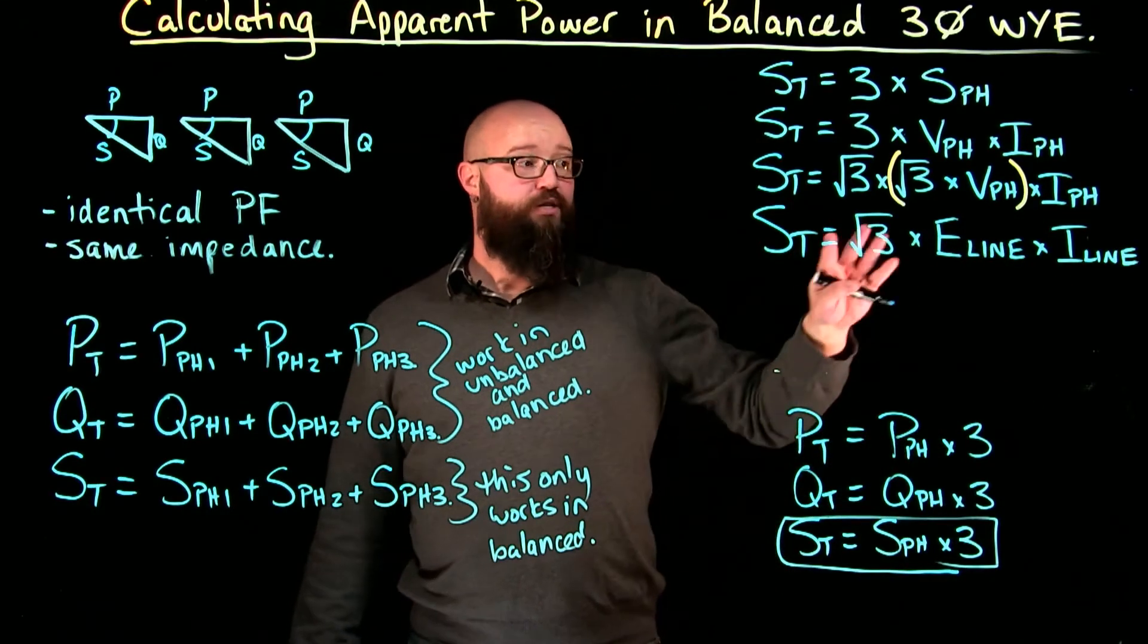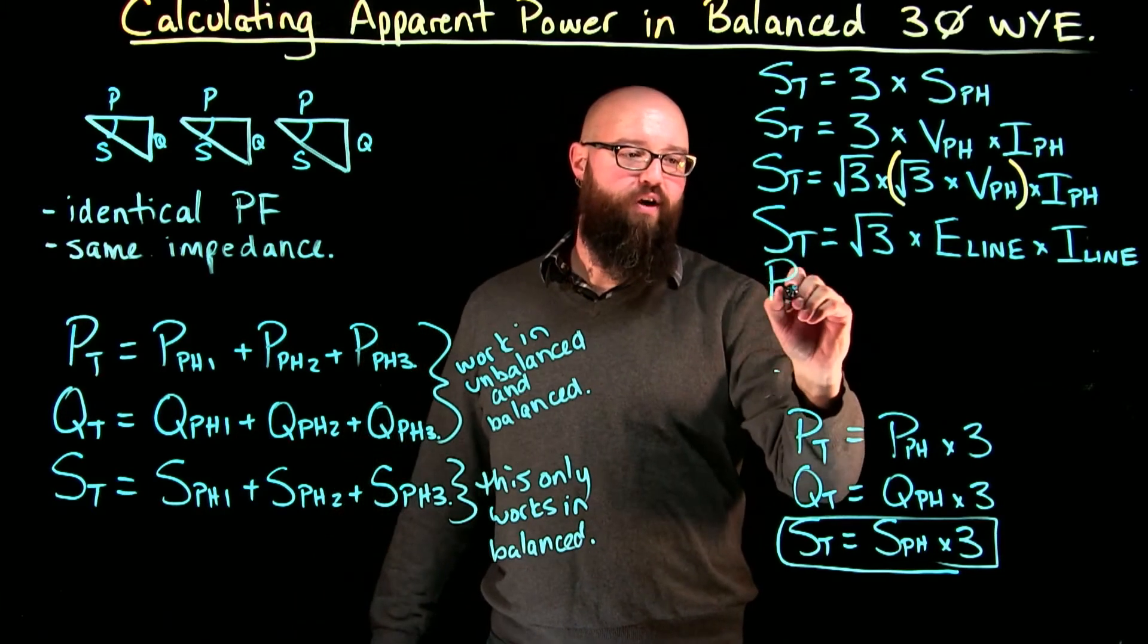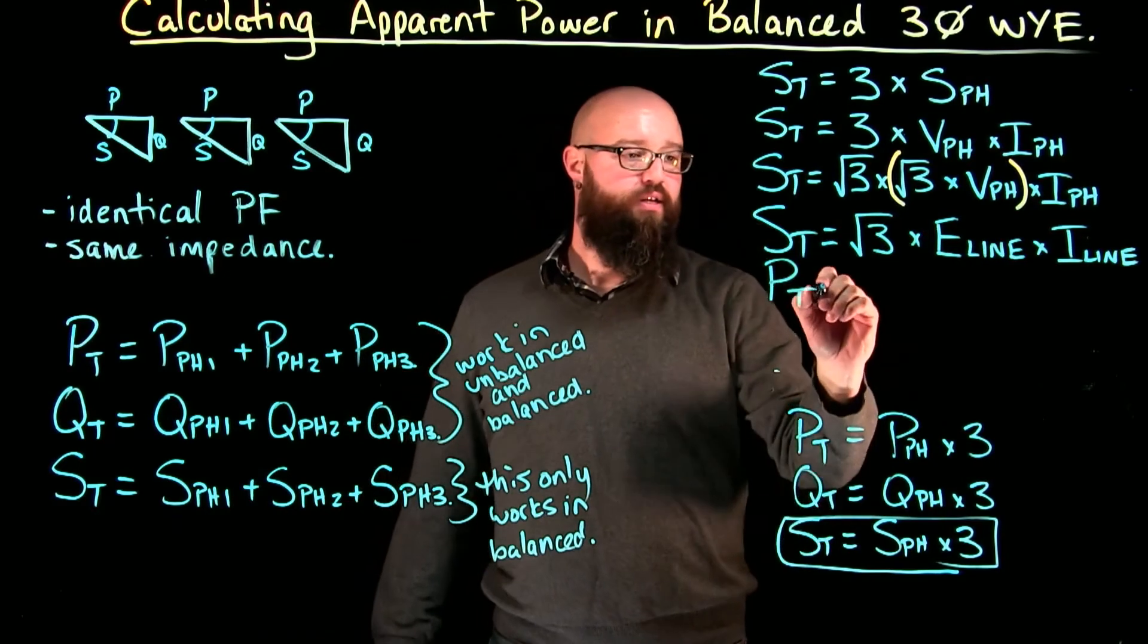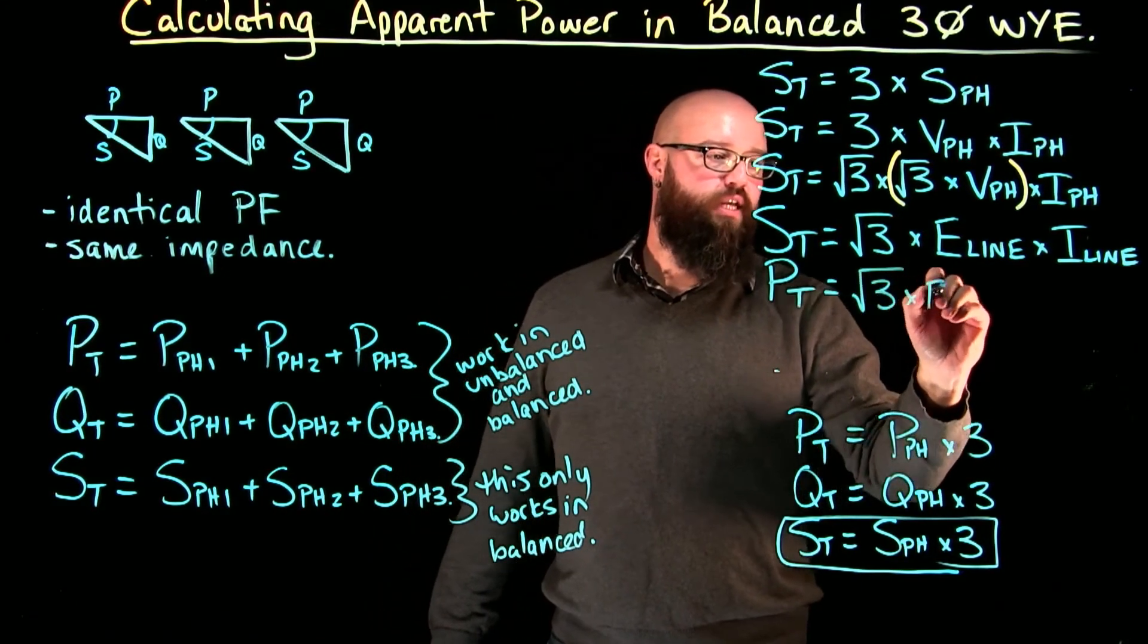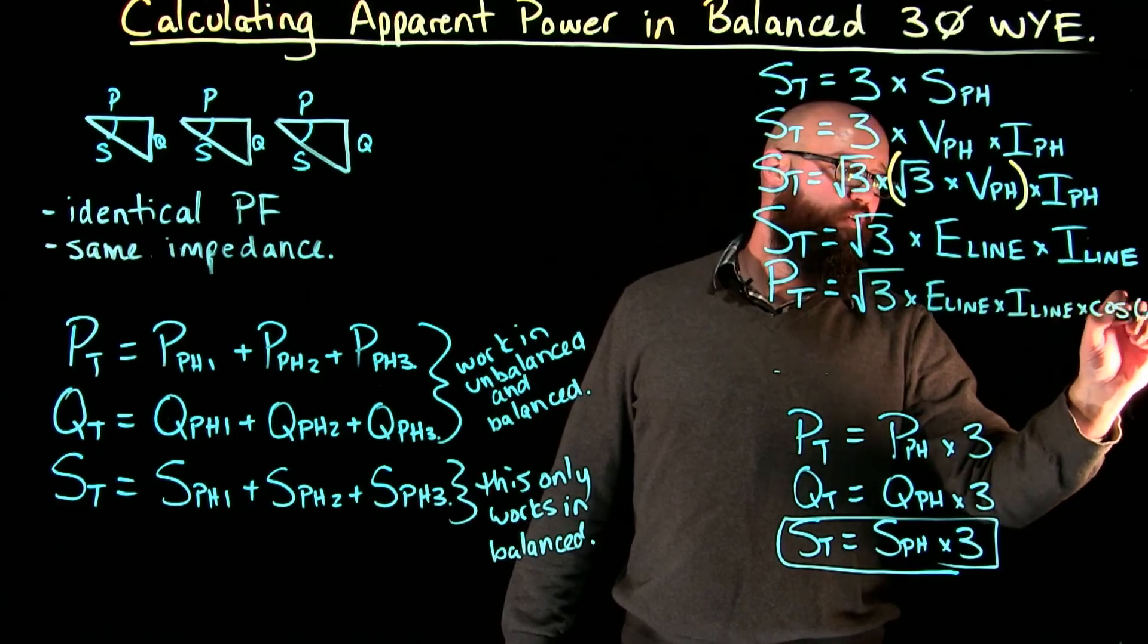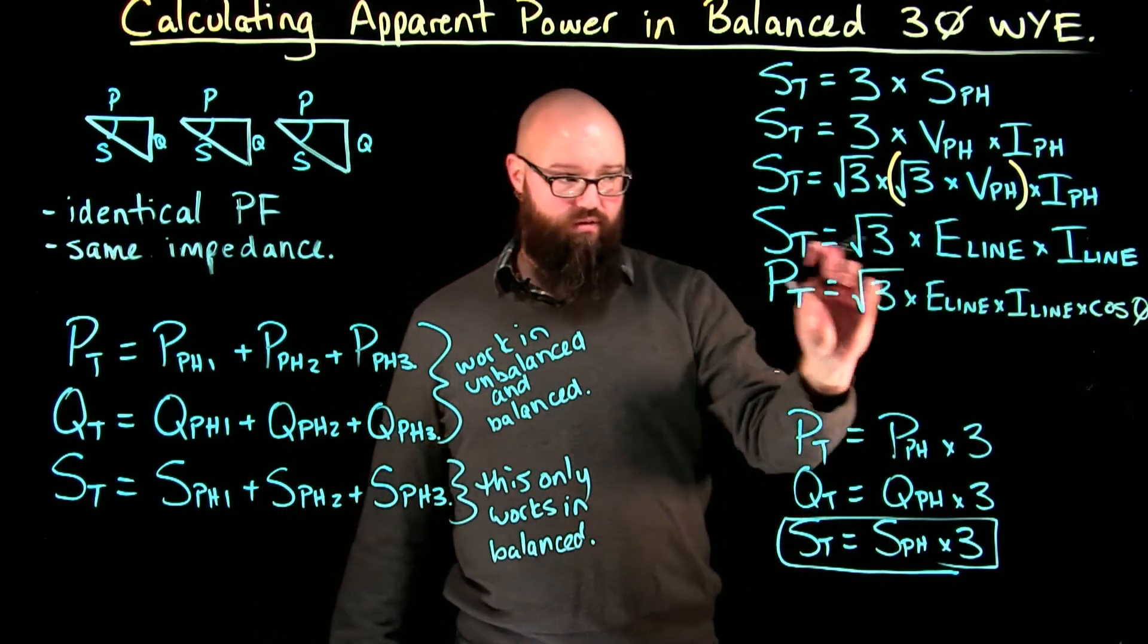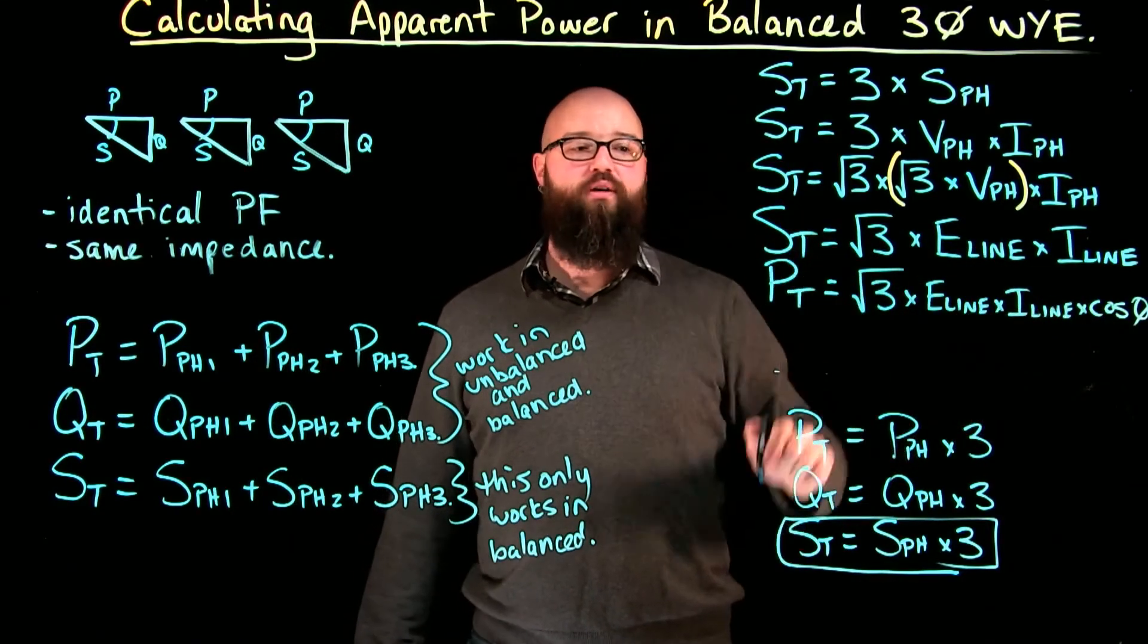Apparent power total is equal to root three times E line times I line. So now I can move through and say, well, what if I wanted to find power total and all I had was apparent power total? Well, power total is equal to root three times E line times I line times cos of the angle, which is power factor. E line times I line times cos of the angle times root three will give me the power total.